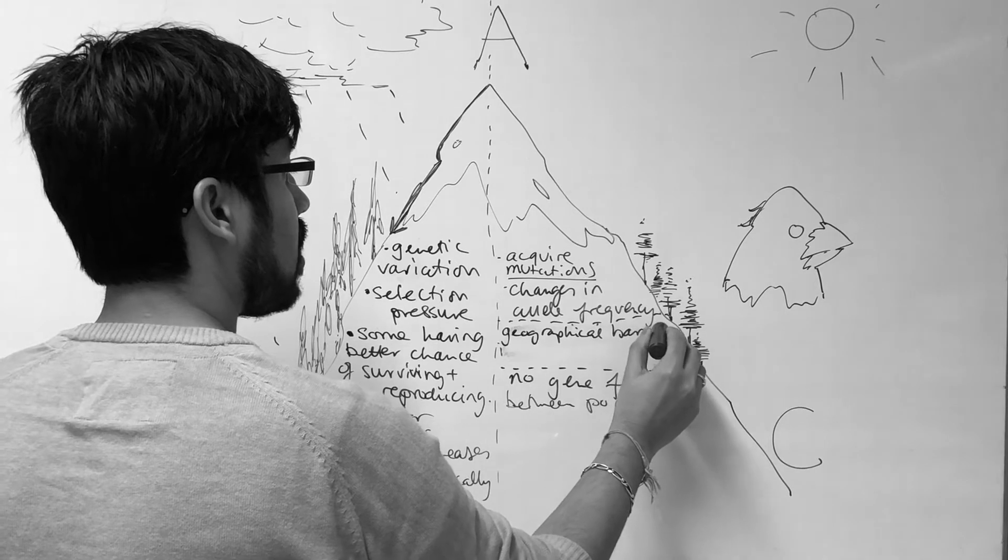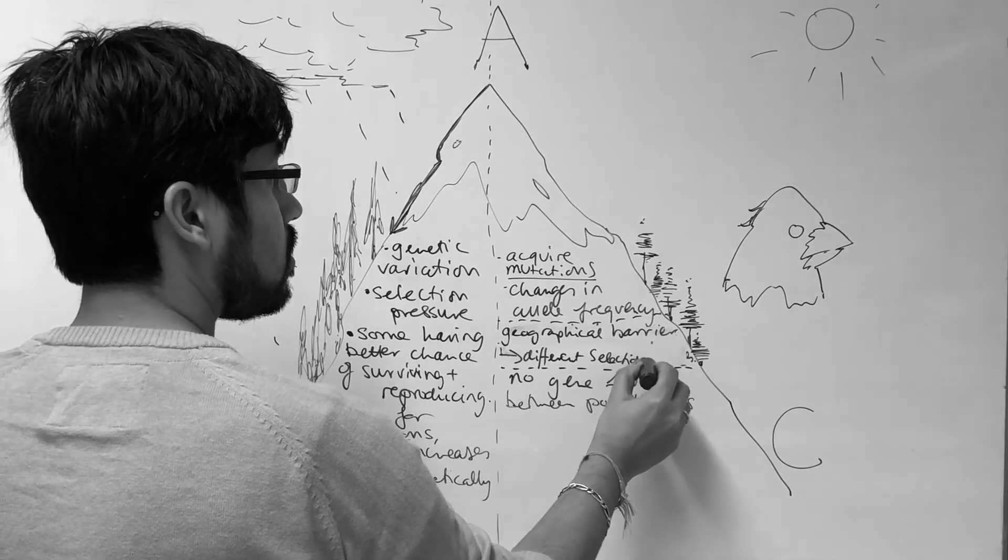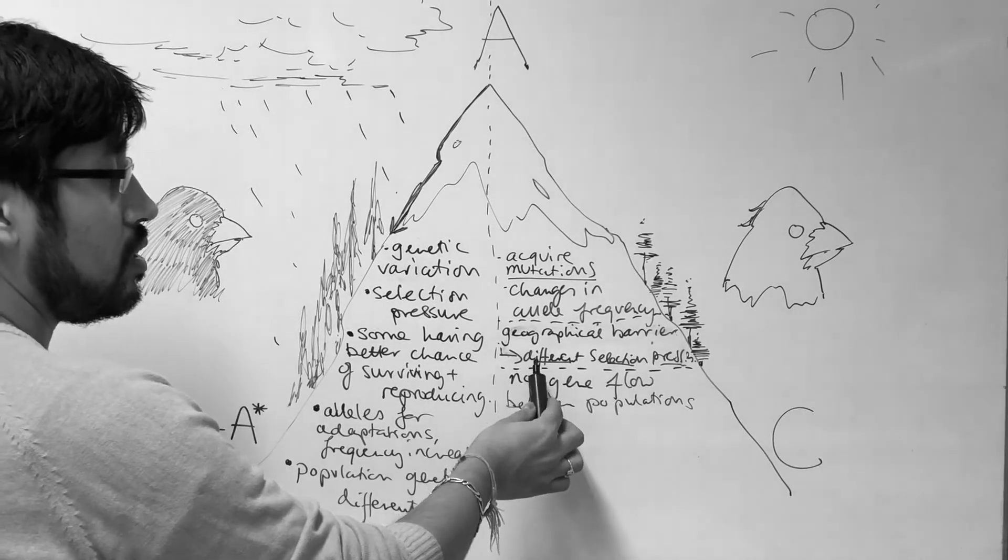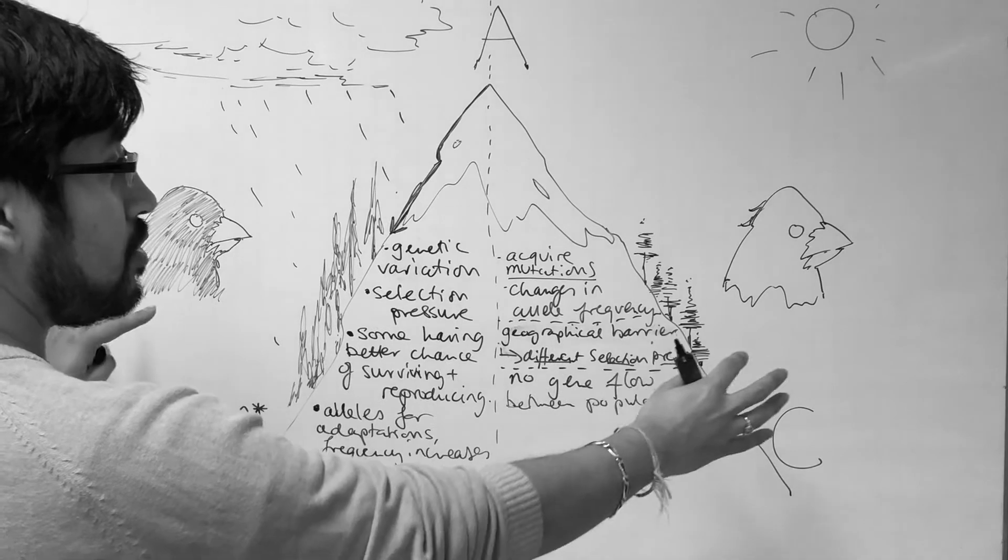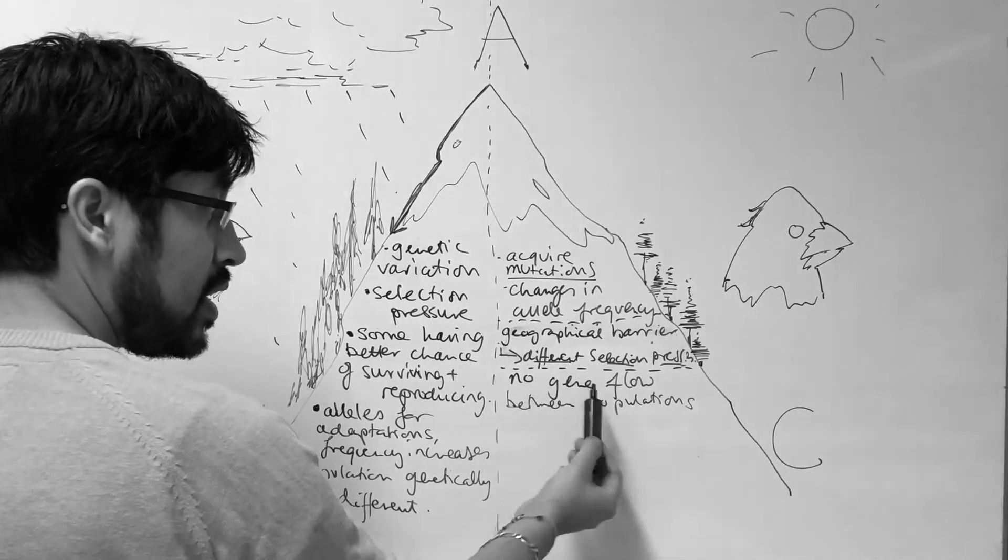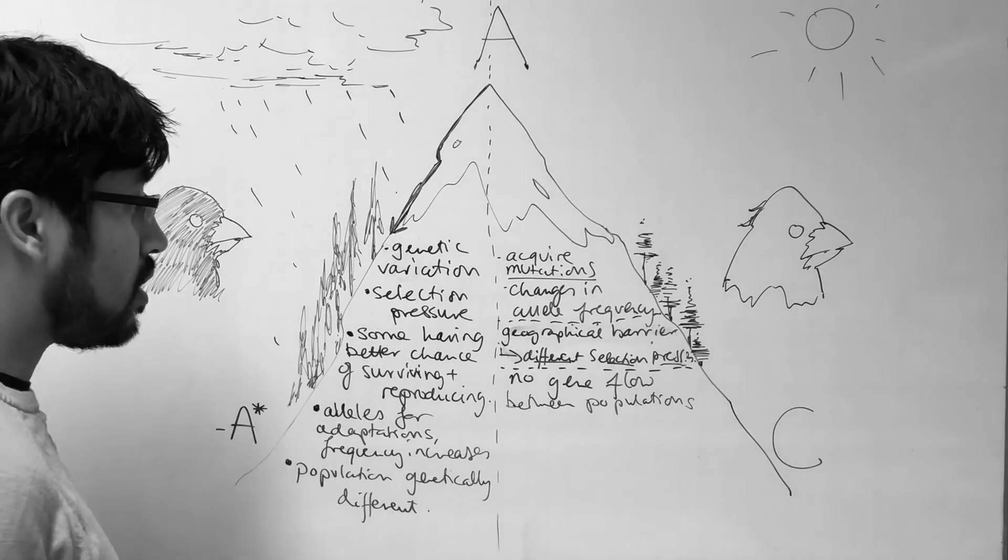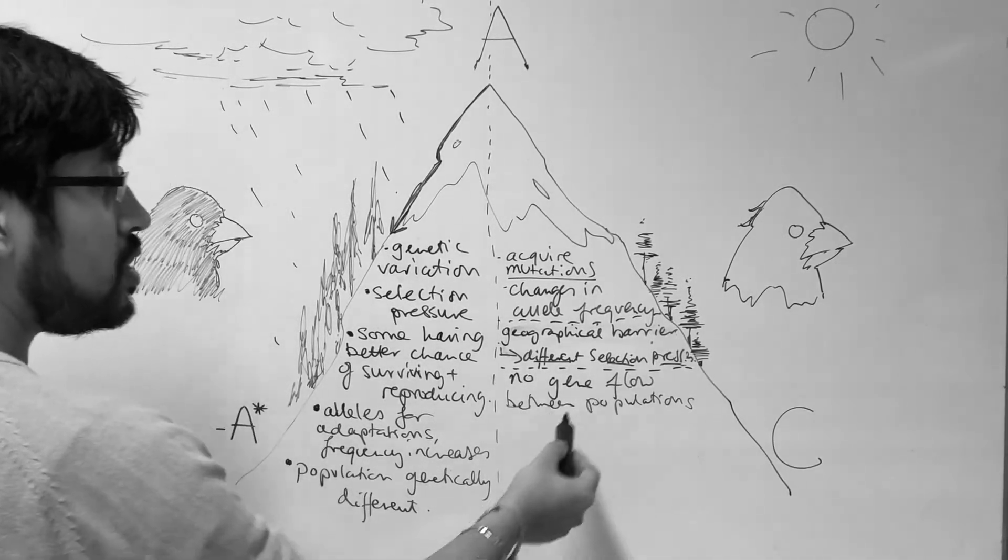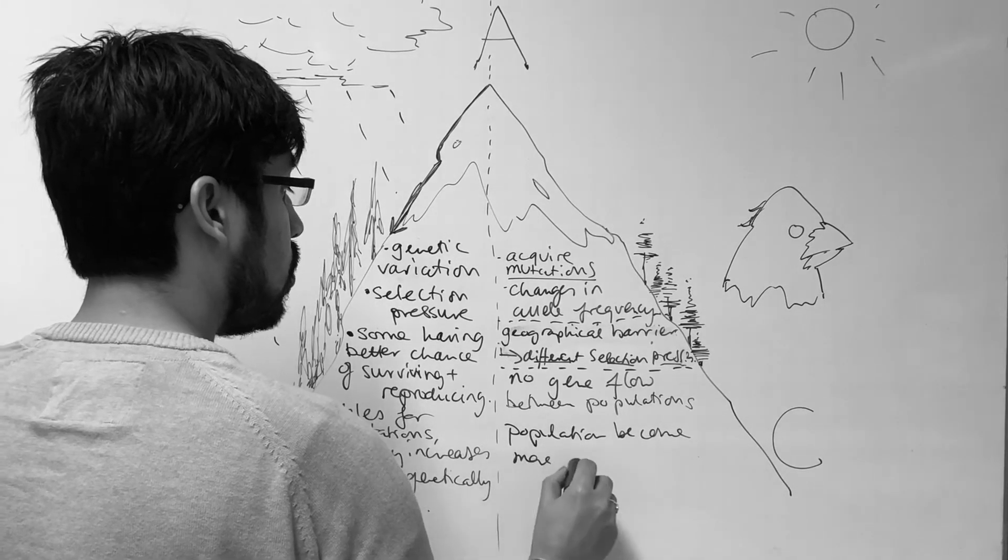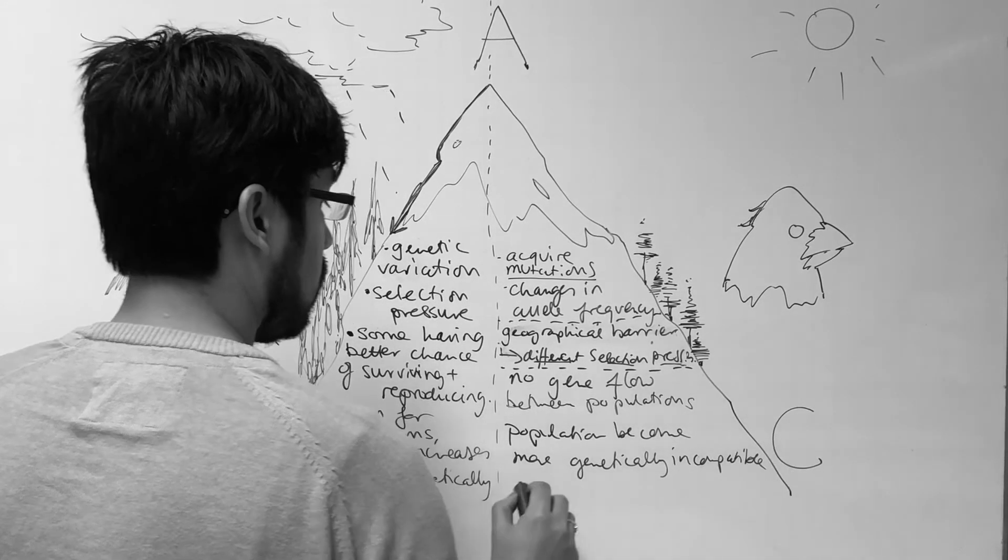A geographical barrier means different selection pressures. This is a key point. Geographical barriers impose different selection pressures, and this causes the two populations to acquire different genetic changes in order to adapt. So this idea of no gene flow between the two populations, that is there whether there is geographical isolation or reproductive isolation. Because there's no gene flow between the populations, these populations become more genetically incompatible over time.